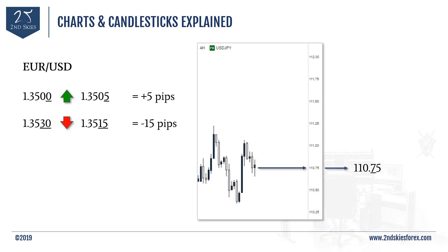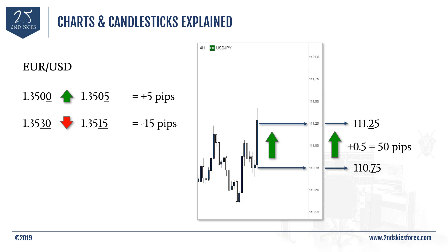One exception to what I mentioned is that most major currency pairs have four decimal points, but Yen pairs have only two decimal points. That's the only exception to this rule. For example, the US dollar versus Japanese Yen might be trading at 110.75 and move up to 111.25 — that's an increase of 0.5, which also equals 50 pips.